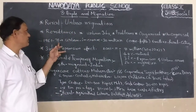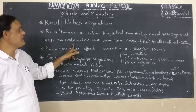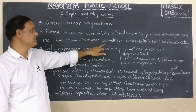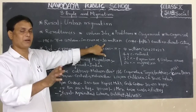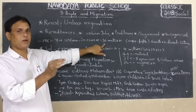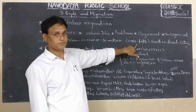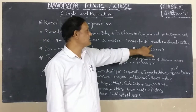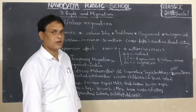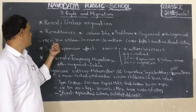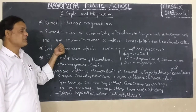From 1961 to 1971, that is a 10-year period, the urban population increased by 30 million people. They came from villages to urban areas for better employment purposes. This was one-fifth of the total increase.